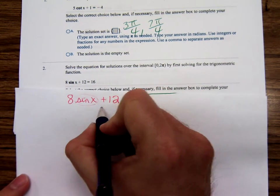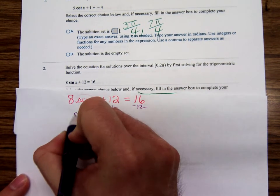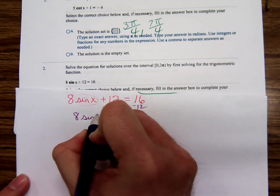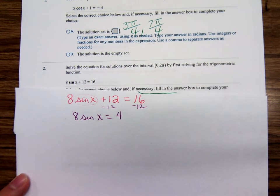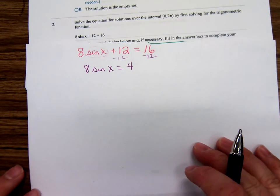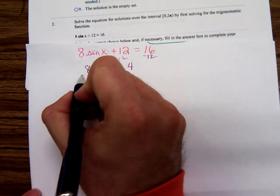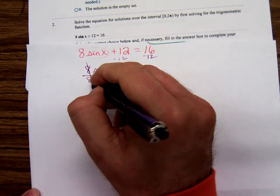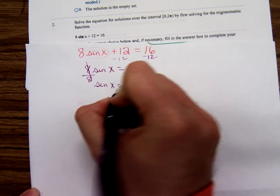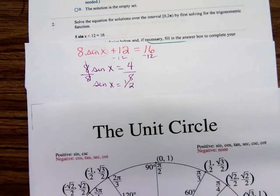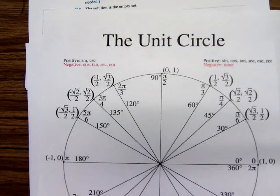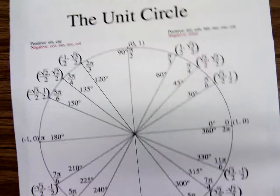So we'd have 8 sine x equals 4, and then divide both sides by 8. So we have sine x equals one half. And we're ready now to look at the unit circle. We're going to know where is sine equal to one half.